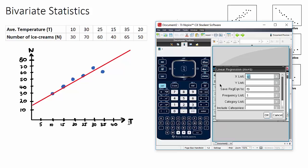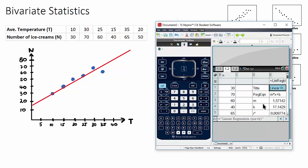If we click on this, our x list stands for our x variable which in this case is T, so you might need to scroll down to find T. And our y list will be the N, the number of ice creams. What then comes out is all of our information. We have a regression equation mx plus b where m is 1.57 and b is 17.14.